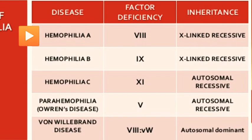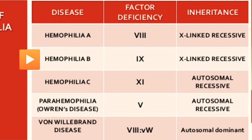Hemophilia A is a deficiency of factor 8 and is X-linked recessive inheritance. It is the most common and most severe type, also known as classic hemophilia. Hemophilia B is the second most common type and is moderate in severity. It is due to deficiency of factor 9, is also X-linked recessive, and is called Christmas disease. Its degree of severity is only 2 to 5 percent.